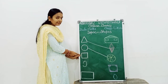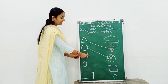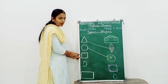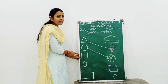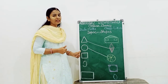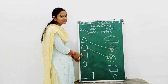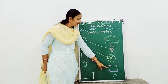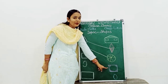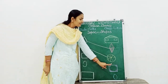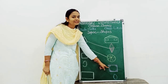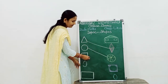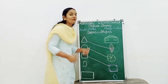Which shape is this? Square. Tell me, student — which figure is similar to square? Yes, cannonball is similar to square. Let's match. Well done.